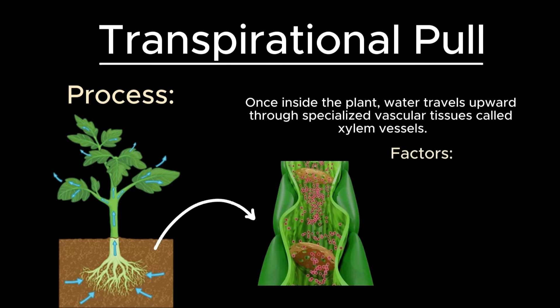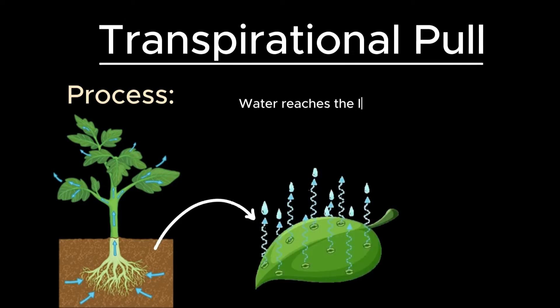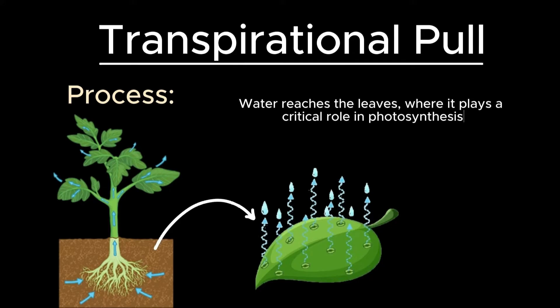The movement of water through the xylem is driven by several factors, including root pressure and capillary action. Water reaches the leaves, where it plays a critical role in photosynthesis.